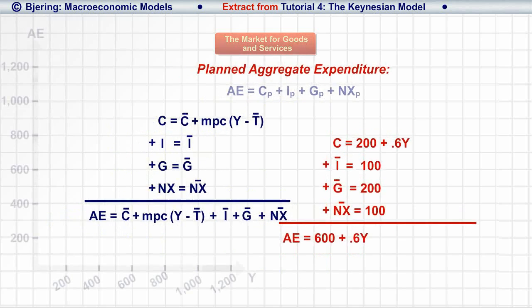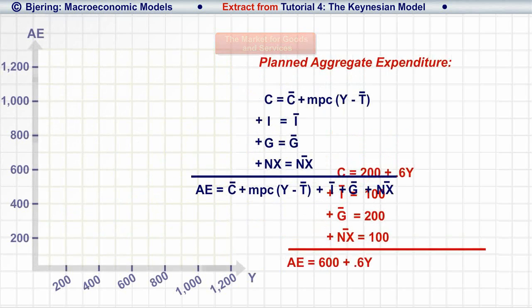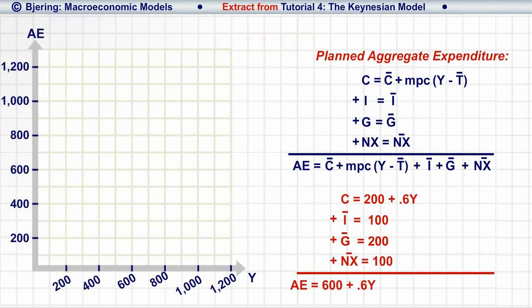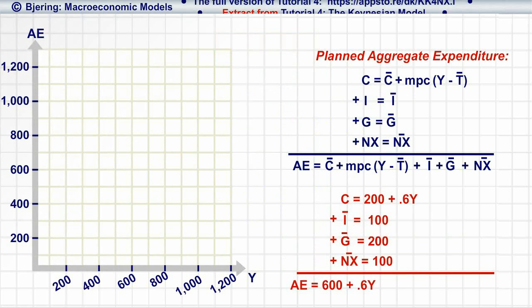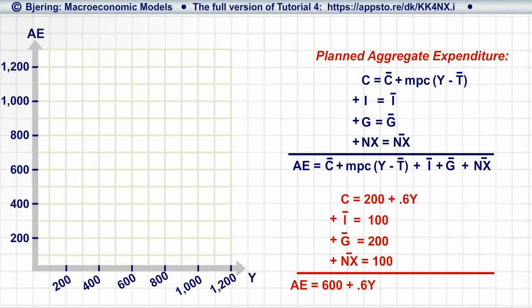Now we return to the graph, showing the relationship between AE and Y. Recall from national accounts that, by definition, output is mirrored by income, so that the letter Y indicates output as well as income.